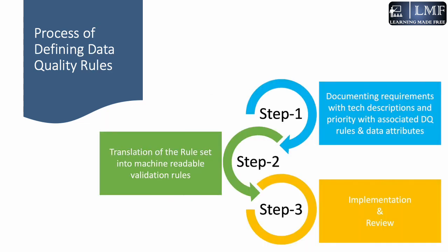Now that we understand the dimensions of data quality and the pillars of data quality management, let's talk about the process of defining data quality rules. At a high level, there are three steps. Step one is documenting requirements with technical descriptions. As mentioned, a key part of any process definition is defining priority — and the same goes for data quality: define the priority with associated DQ rules and data attributes based on business consumption.